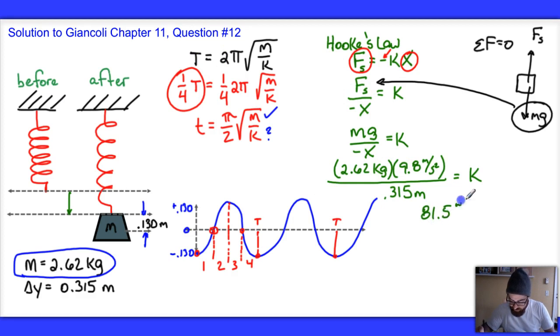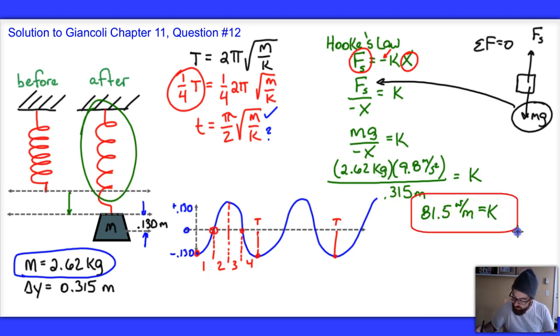81.5 Newtons per meter is the constant of elasticity of this spring, this guy right over here. This value of K is not my answer, but it's required to solve the problem. I'm going to box that in because it's important. And that is what ends up getting substituted right there.